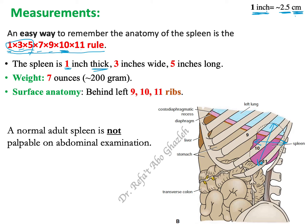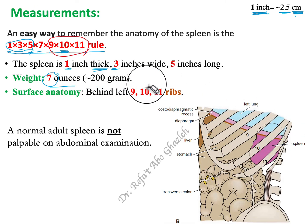The 5 inches indicates the length from the upper pole to the lower pole of the spleen. Now, 7 — the next odd number — indicates 7 ounces, which is around 200 grams; that is the weight of the spleen. Most importantly, 9, 10, and 11 indicate the number of ribs related to the spleen — ribs number 9, 10, and 11.